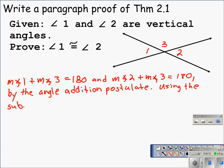I abbreviate substitution with SUB, and that would be the substitution property of equality. By using the substitution property of equality, we can make the statement that the measure of angle 1 plus the measure of angle 3 is equal to the measure of angle 2 plus the measure of angle 3.